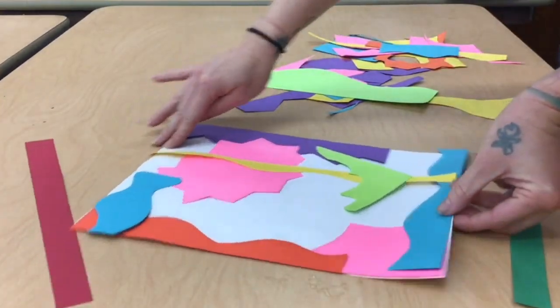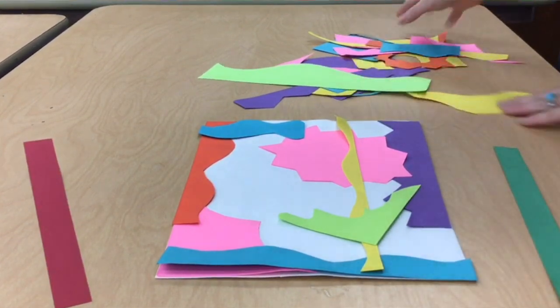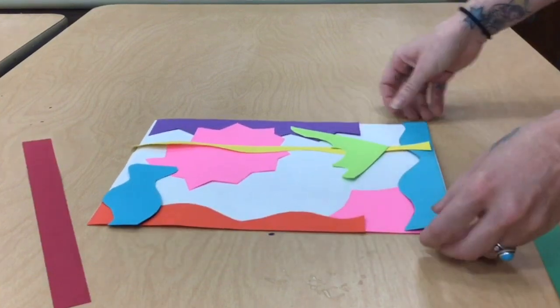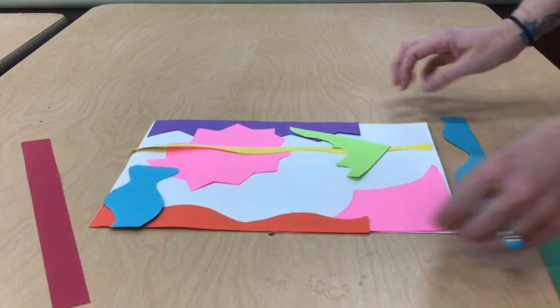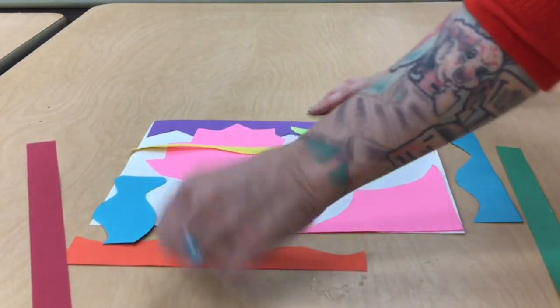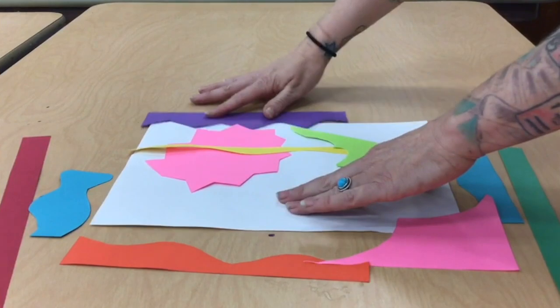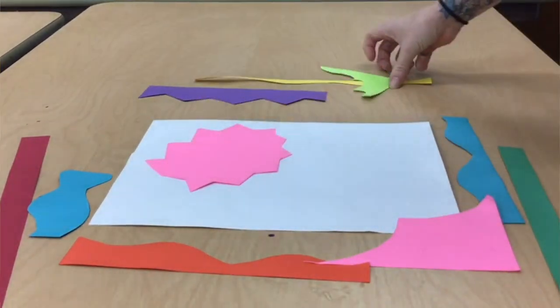Once you are satisfied with the way your collage looks, you may take all your extra scraps away. It is now time to glue. To start the gluing process, remove your pieces from your background to the sides that you intend to glue them on. Remember, start with the background pieces first if you have shapes that will be layered.